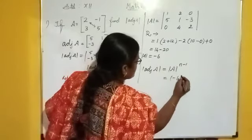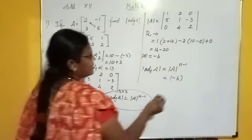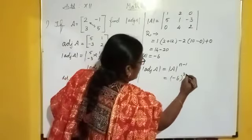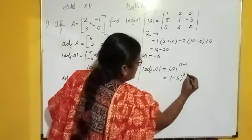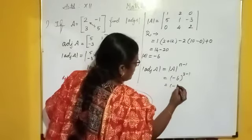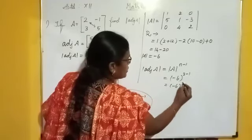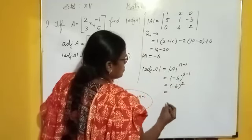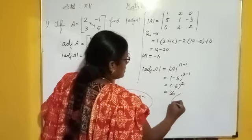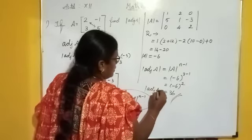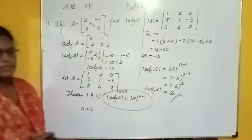Determinant of A is minus 6. Here the order is 3, so 3 minus 1 equals 2. Minus 6 to the power 3 minus 1 is 2. So minus 6 whole squared is plus 36. Therefore, the determinant of adjoint of A is 36.